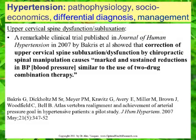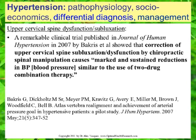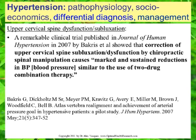Related to central neurogenic hypertension, we need to consider upper cervical spine dysfunction and subluxation as a potential cause of hypertension. A remarkable clinical trial published in the Journal of Human Hypertension in May 2007, volume 21, page 347, showed that correction of upper cervical spine subluxation by chiropractic spinal manipulation could cause marked and sustained reductions in blood pressure similar to the use of two-drug combination therapy.